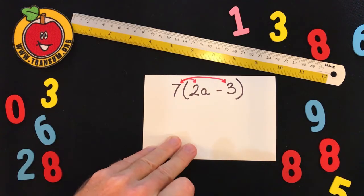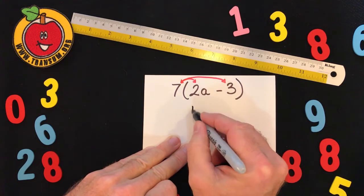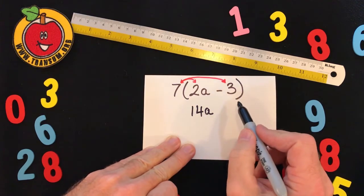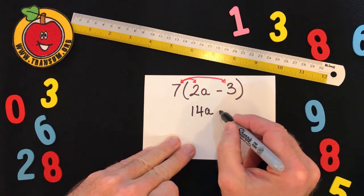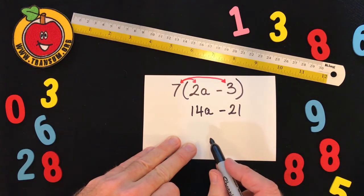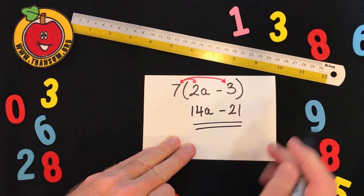So there are two multiplications to be done. The first one is seven times 2a, which is 14a, and the second is seven times negative three, which is negative 21. So 14a minus 21 is the answer that you would type in to that question.